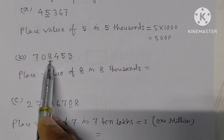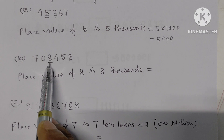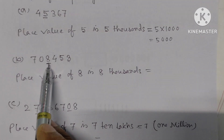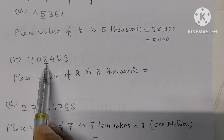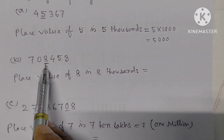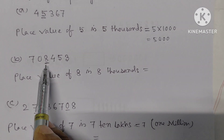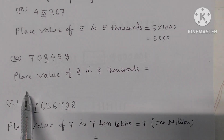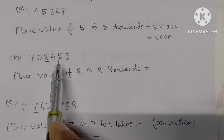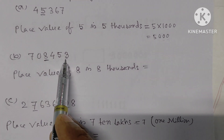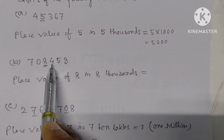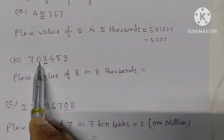Part B: The digit 8 is underlined. We have to find the place value of this 8 in this number. Counting the places: ones (Ekak), tens (Daha), hundreds (Khatak), thousands (Hazar).